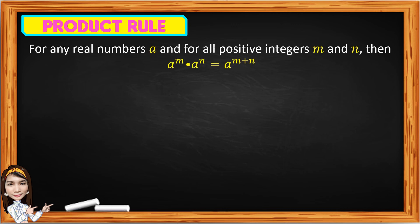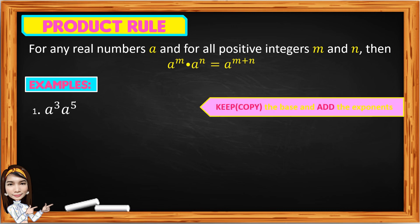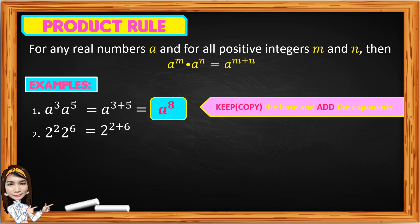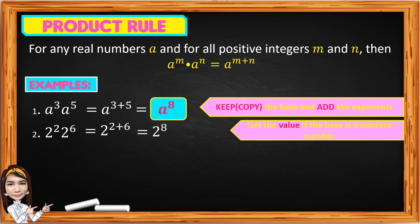Let's begin with the first law of exponents: the product rule. For any real number a and for all positive integers m and n, a to the m times a to the n equals a to the m plus n. Example 1: a cubed times a to the fifth — copy the base a and add the exponents 3 plus 5, giving a to the 8th. Example 2: 2 squared times 2 to the 6th — copy the base 2, add exponents 2 plus 6 to get 2 to the 8th, which equals 256.